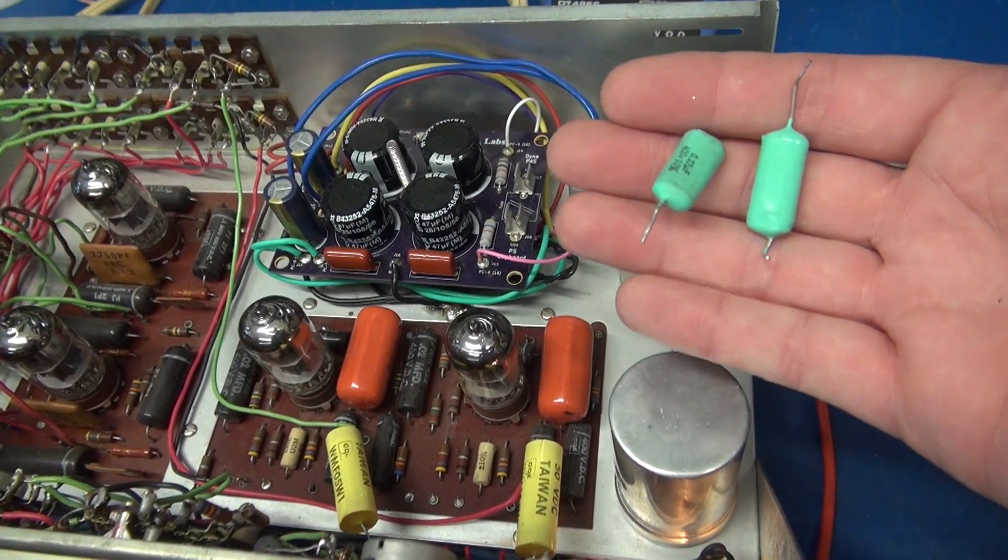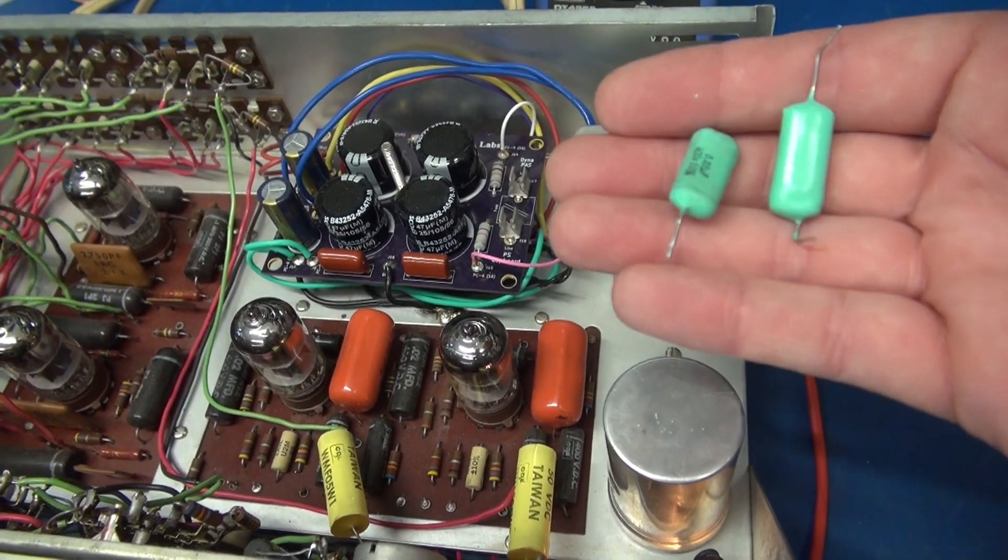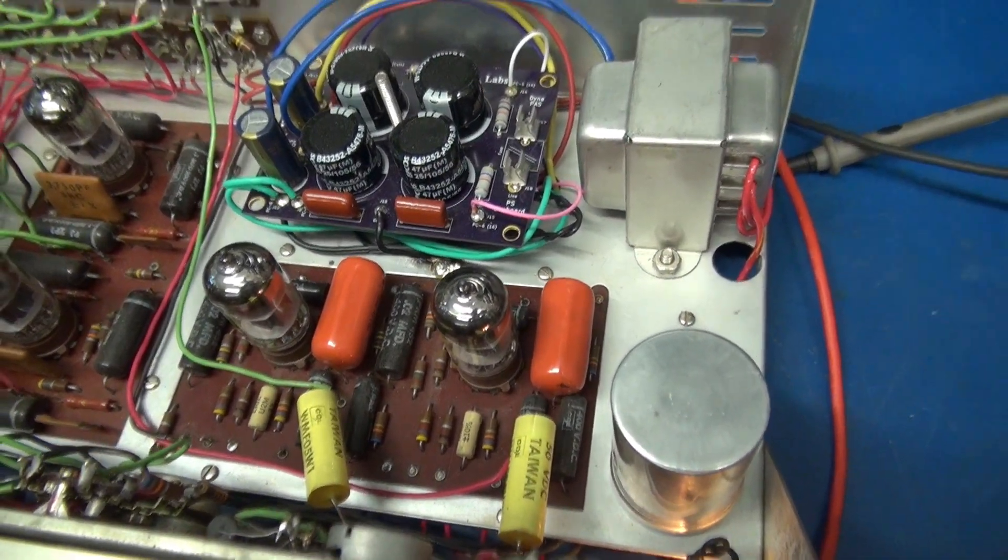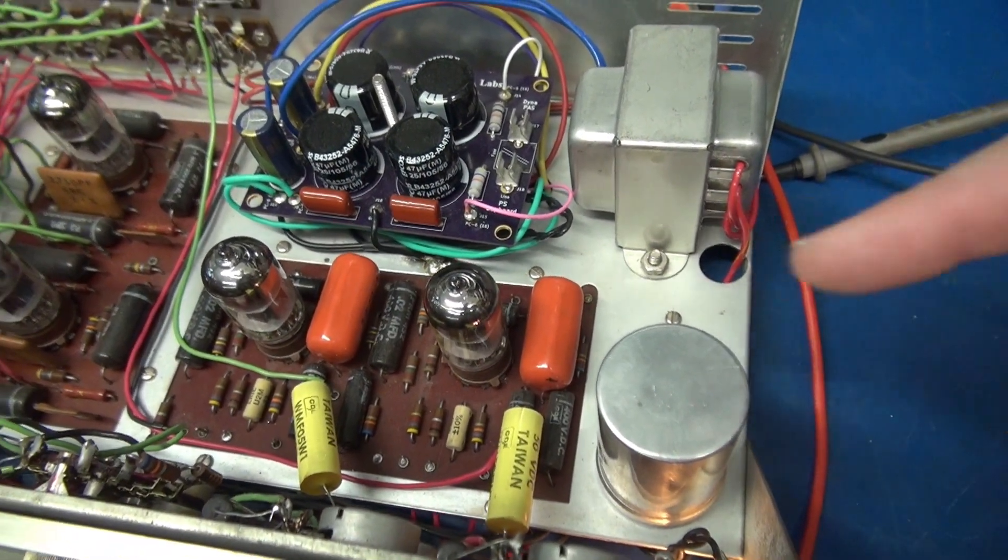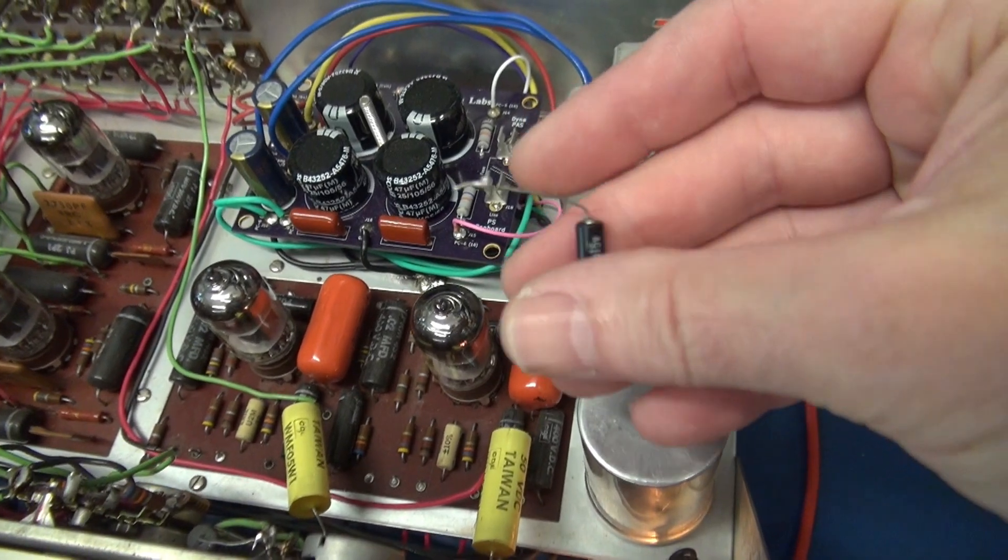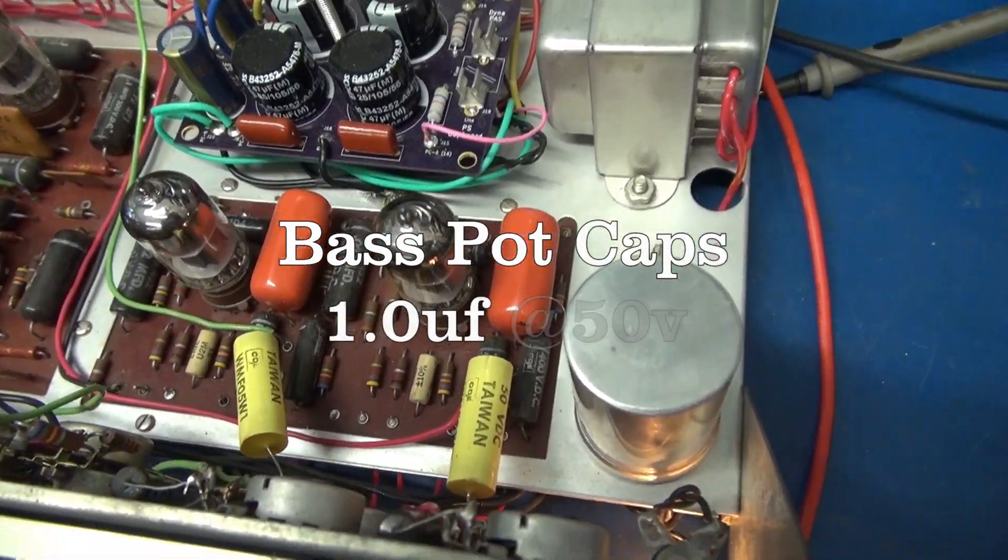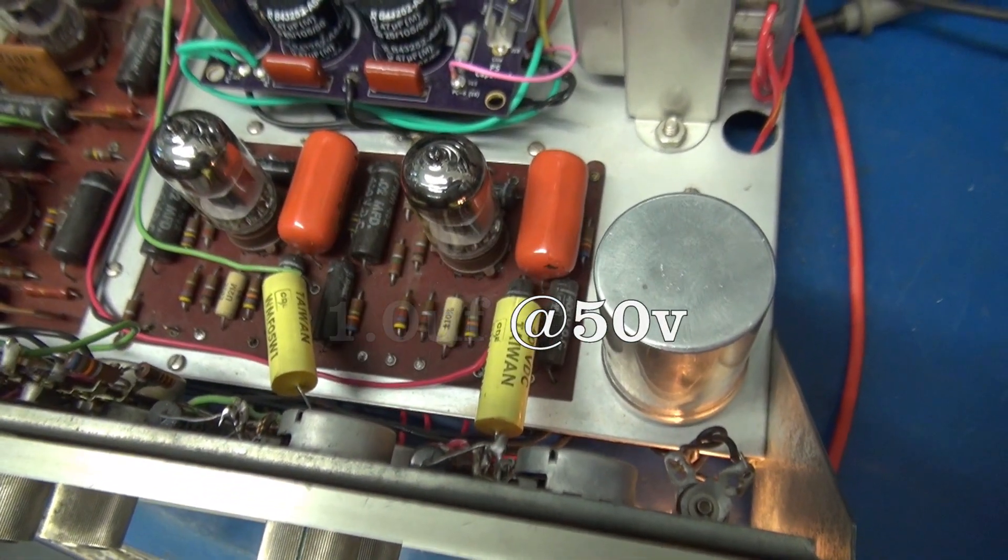I changed out those 0.22 microfarad caps at 400 volts with some 0.22 at 600 volts. They are Sprague. I also changed out these little tiny electrolytics that they had on the base pots. It's a higher quality 50 volt type.